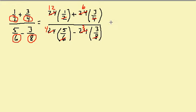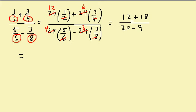So now I have 12 times 1 is 12, plus 6 times 3 is 18. So 12 plus 18 over 4 times 5 is 20, minus 3 times 3, so that's minus 9. So 12 plus 18 is 30 over 20 minus 9, which is 11.